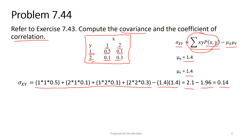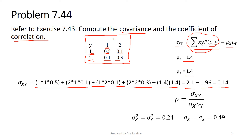Now we need to find the correlation coefficient. The correlation is the ratio of the covariance to the product of the standard deviations of x and y. In the previous problem, we found the variances of x and y were both equal to 0.24. We get their standard deviation by square-rooting that. Plugging these values into the correlation coefficient equation, we get 0.583.